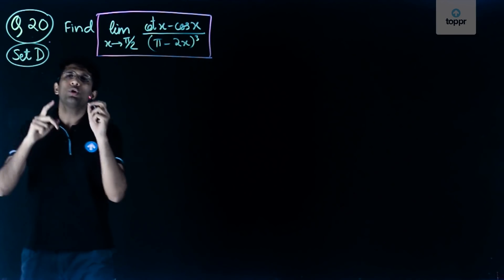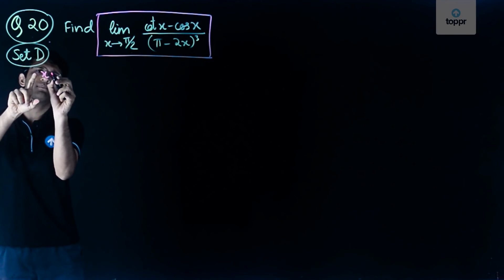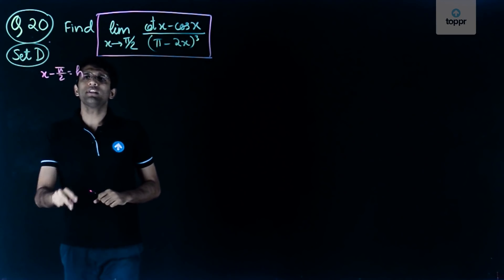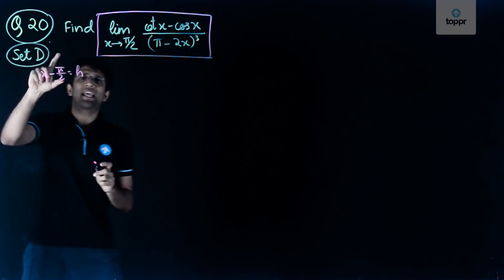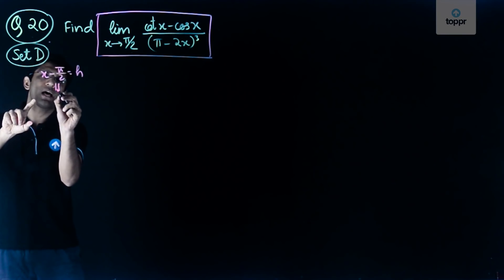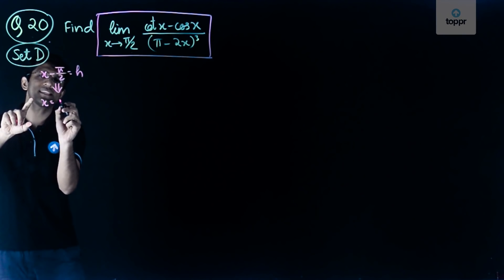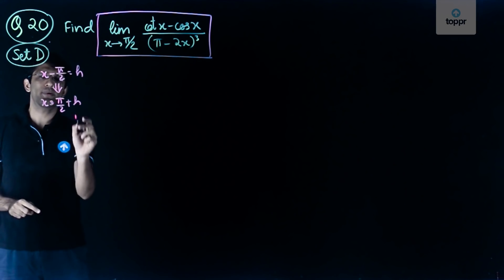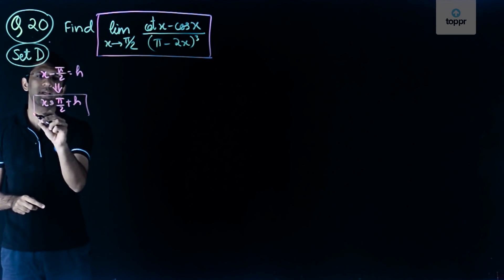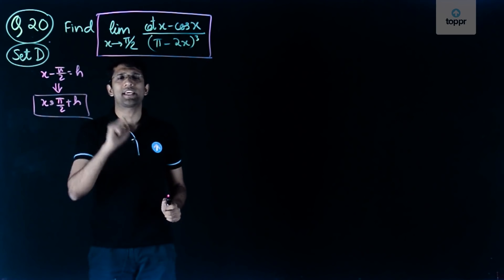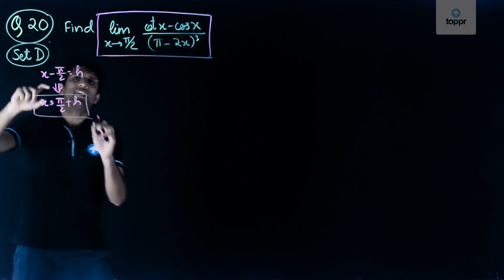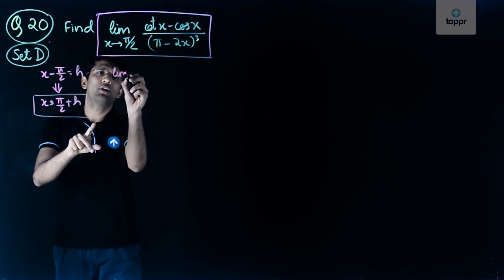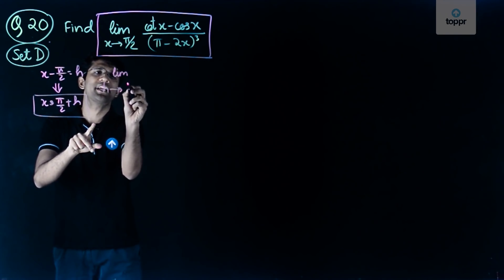Now note that here we can substitute x minus pi by 2 equal to h. So we are substituting x as pi by 2 plus h. When x minus pi by 2 equals h, this implies x equals pi by 2 plus h. So when x tends to pi by 2, h will tend to 0.